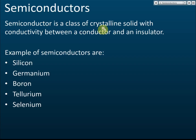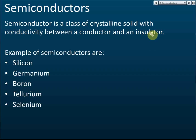A semiconductor is a class of crystalline solid with conductivity between a conductor and an insulator. Compared to conductors, the conductivity is low, but compared to an insulator, it can conduct electricity under certain conditions. So the conductivity is between conductor and insulator — better than an insulator but much lower than a conductor.